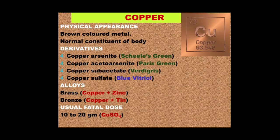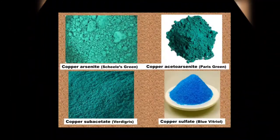Important alloys of copper include brass, which is an alloy of copper and zinc, and bronze, which is an alloy of copper and tin. Brass and bronze are more or less inert, so they don't generally cause problems. The usual fatal dose — the figure almost always relates to the commonest salt seen in toxicology, which is copper sulfate — and the range is 10 to 20 grams.